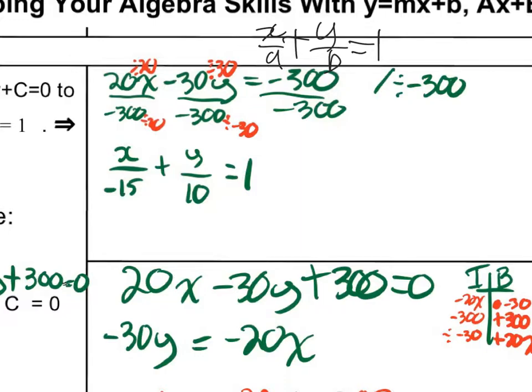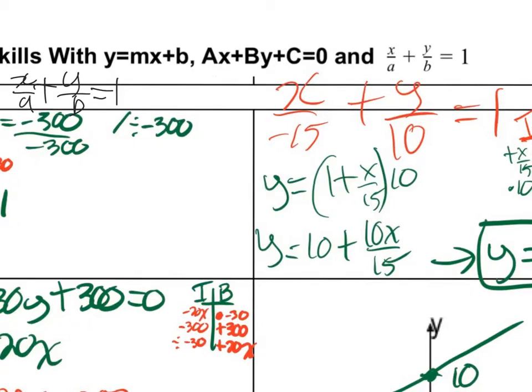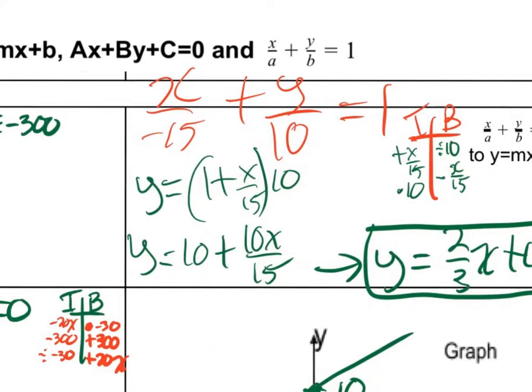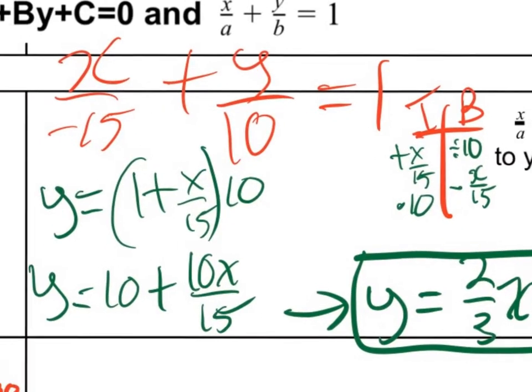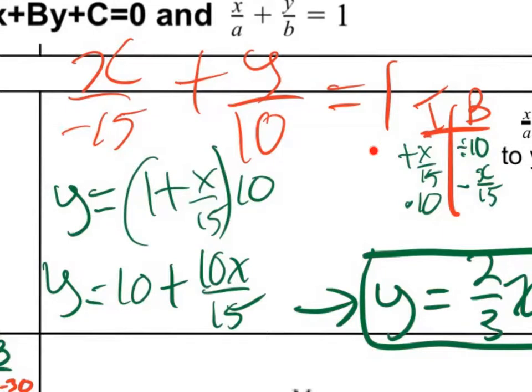So the next thing that we're going to do is we're going to come over here and we're going to take the form that we just had and we're going to put it into y equals mx plus b form. So now what sorts of things will I need to do? Well, I've got this form of the equation right now. x over negative 15 plus y divided by 10 equals 1. And I have to get y by itself. The whole goal is to get y by itself. So the first thing I'm going to do is consider BEDMAS operations.